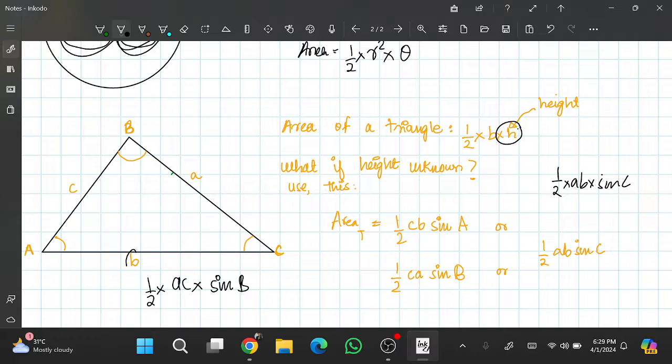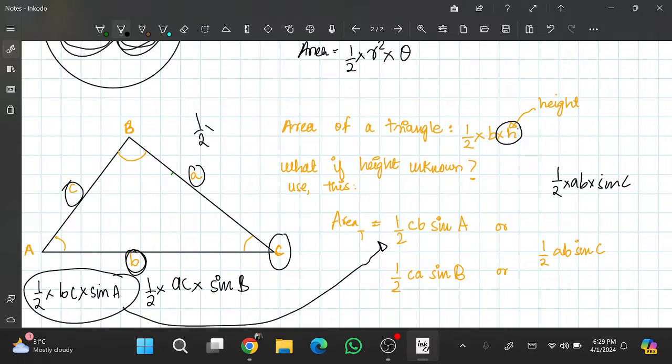I can do that for the other angles as well. Let's say I want to, I've been given b and c: 1/2 times bc times sin A. You see you can easily find it here. And the same thing if I'm given a and b and angle C: 1/2 times ab times sin C.